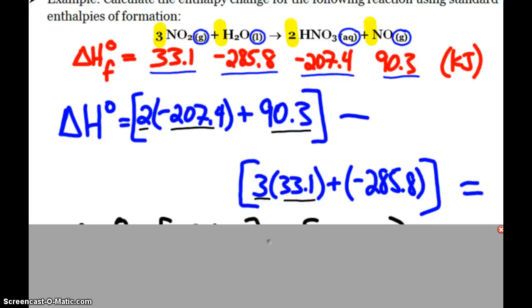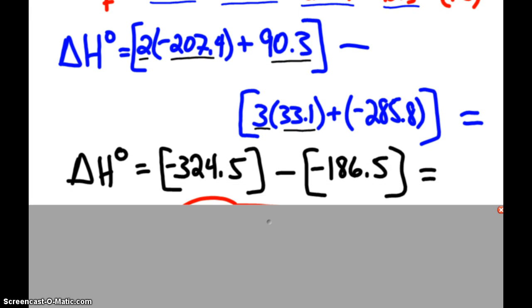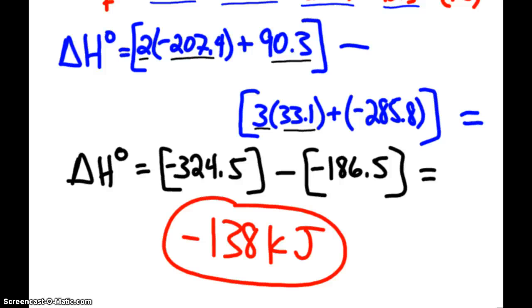The other big thing is you just got to make sure you watch the negatives and positives while we're adding and subtracting. So that ends up being negative 324.5 minus negative 186.5, so you get the overall delta H for this reaction being negative 138 kilojoules.